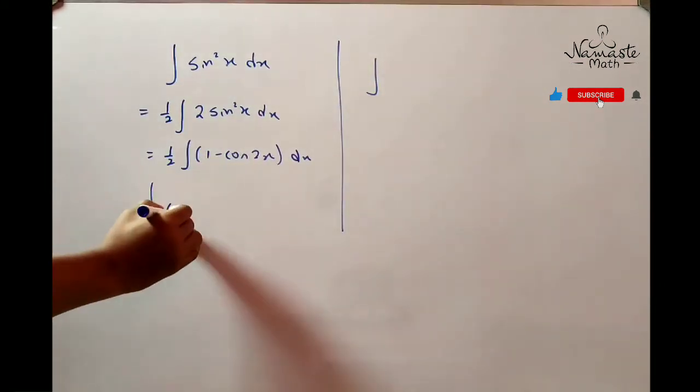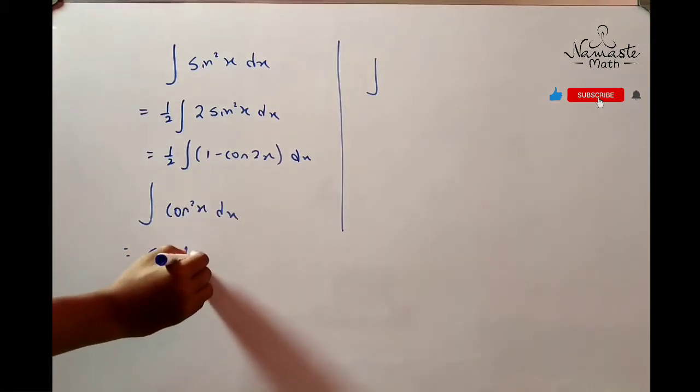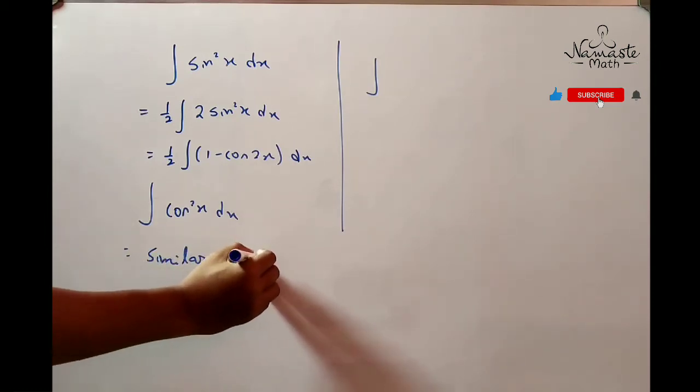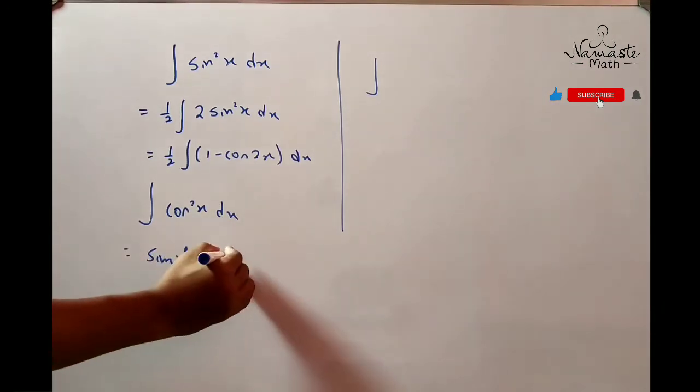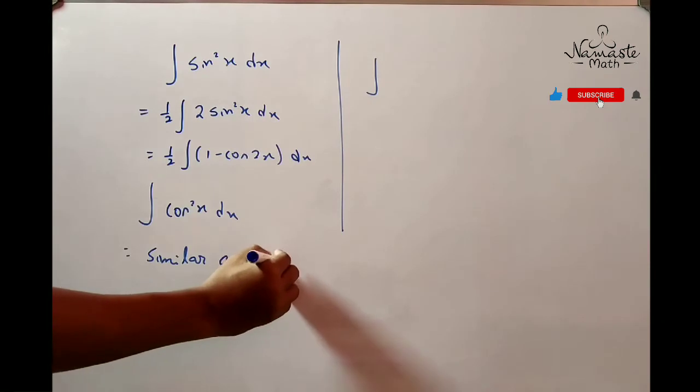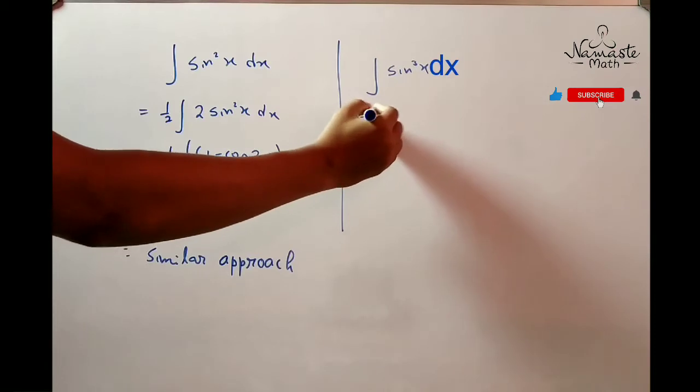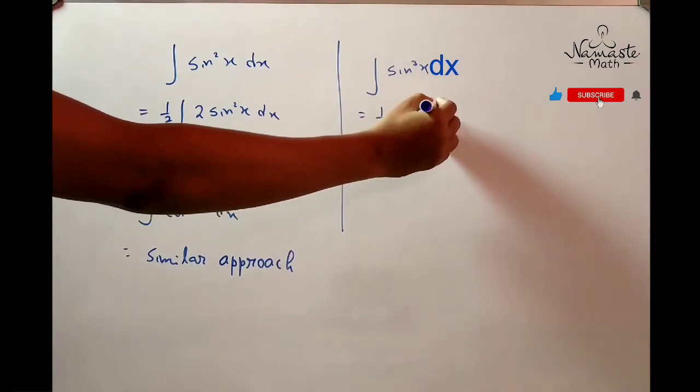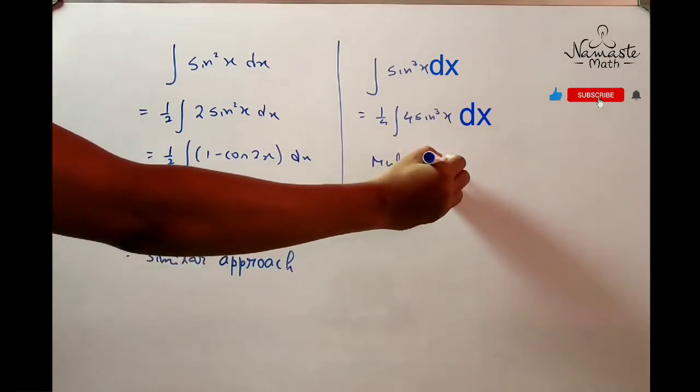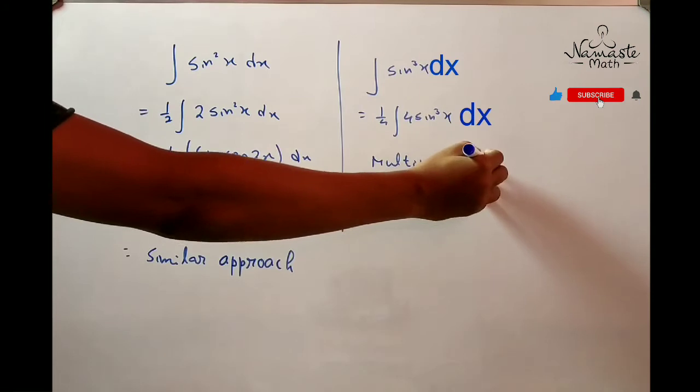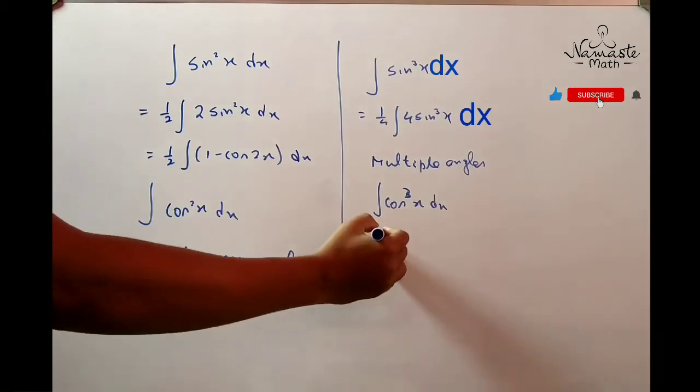For cos²x dx, a similar approach is to be done. Now for sin³x dx you have to multiply it by 1/4 times 4sin³x dx, then use the formula of multiple angles for sin3θ and proceed to the integrating factors. Cos³x dx follows a similar approach.